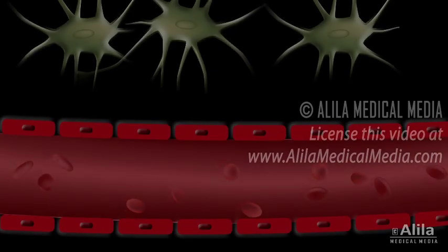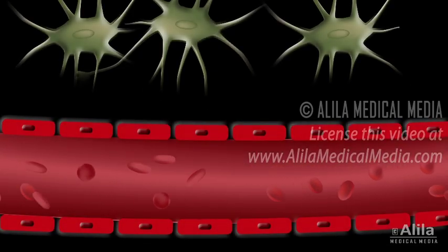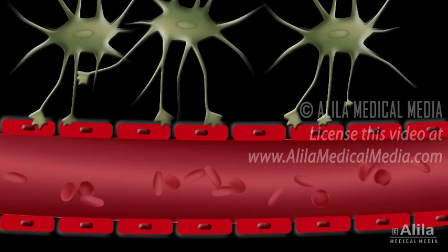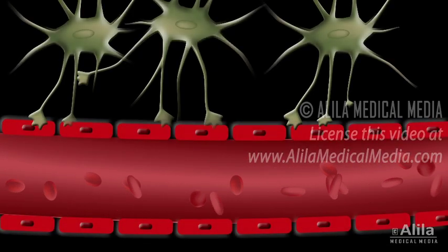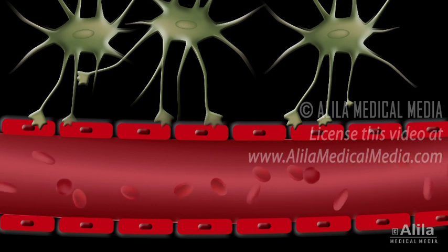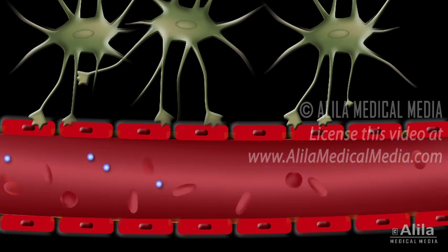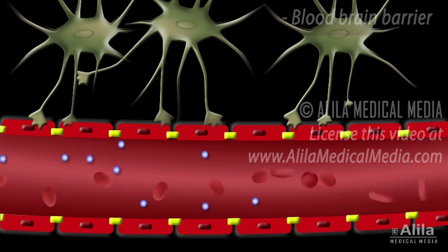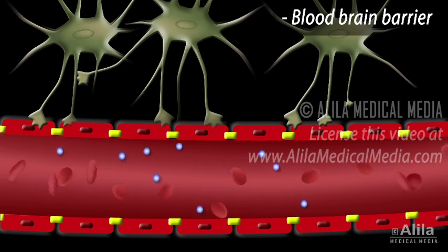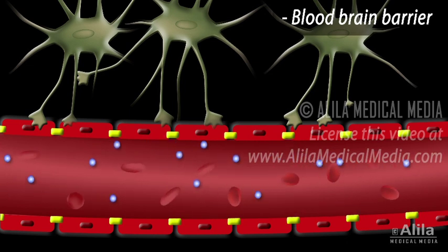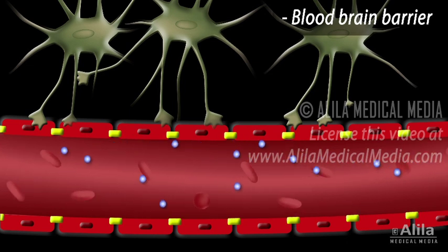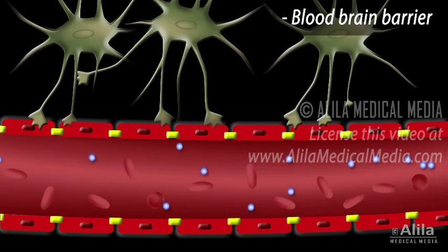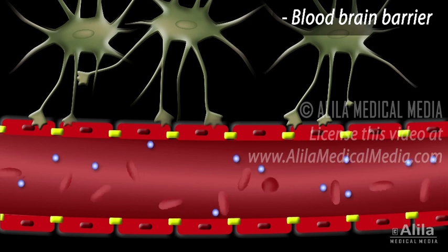Through their processes, known as perivascular feet, astrocytes induce endothelial cells of blood vessels to form tight junctions. These tight junctions are the basis of the blood-brain barrier that restricts the passage of certain substances from the bloodstream to the brain tissue.